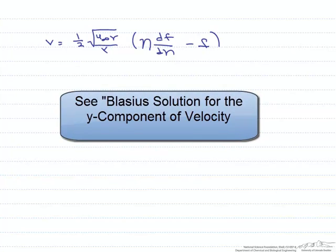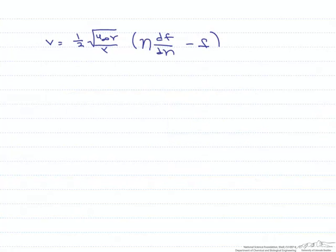Earlier we came up with a solution for the y-component of velocity v at the edge of a boundary layer, such that v equals one-half times the square root of the free stream velocity times the kinematic viscosity divided by x, all times eta df/deta minus f.